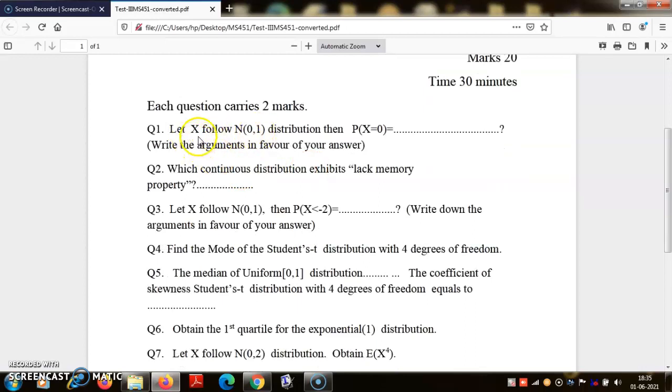Question number one: if X follows normal distribution, then what is probability X equals zero? X is a continuous distribution - normal or any continuous distribution, uniform, exponential, whatever - then probability X equal to any value, X equal to zero or X equal to any number, is zero.